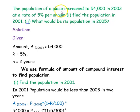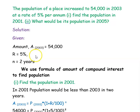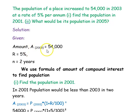The next example: the population of a place increased to 54,000 in 2003 at a rate of 5% per annum. Find the population in 2001, and what would be its population in 2005? The population in 2003 is given as 54,000, increasing at 5% per annum. We treat 54,000 as the amount in the compound interest formula, with a time difference of 2 years.